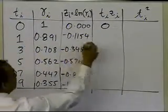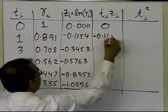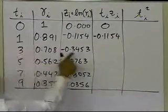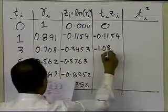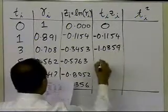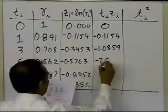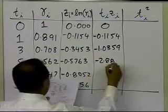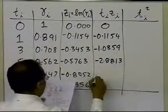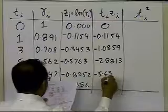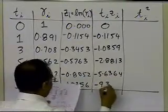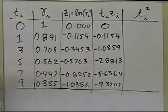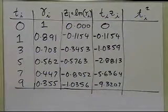The second one will be 1 times minus 0.1154. Next time it will be 3 times this number here, which turns out to be minus 1.0359, then I get minus 2.8813, minus 5.6364, minus 9.3207. So those are the multiplication of the t and z values.